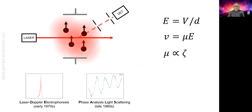Instead, you get a single average value. Above 10 millimolar ionic strength, commercial instruments switch to using PALS simply because they cannot do the laser Doppler measurements. But PALS measurements are only valid if the sample is truly monomodal with respect to zeta potential. You have to assess whether that's an appropriate assumption for your particular purpose.